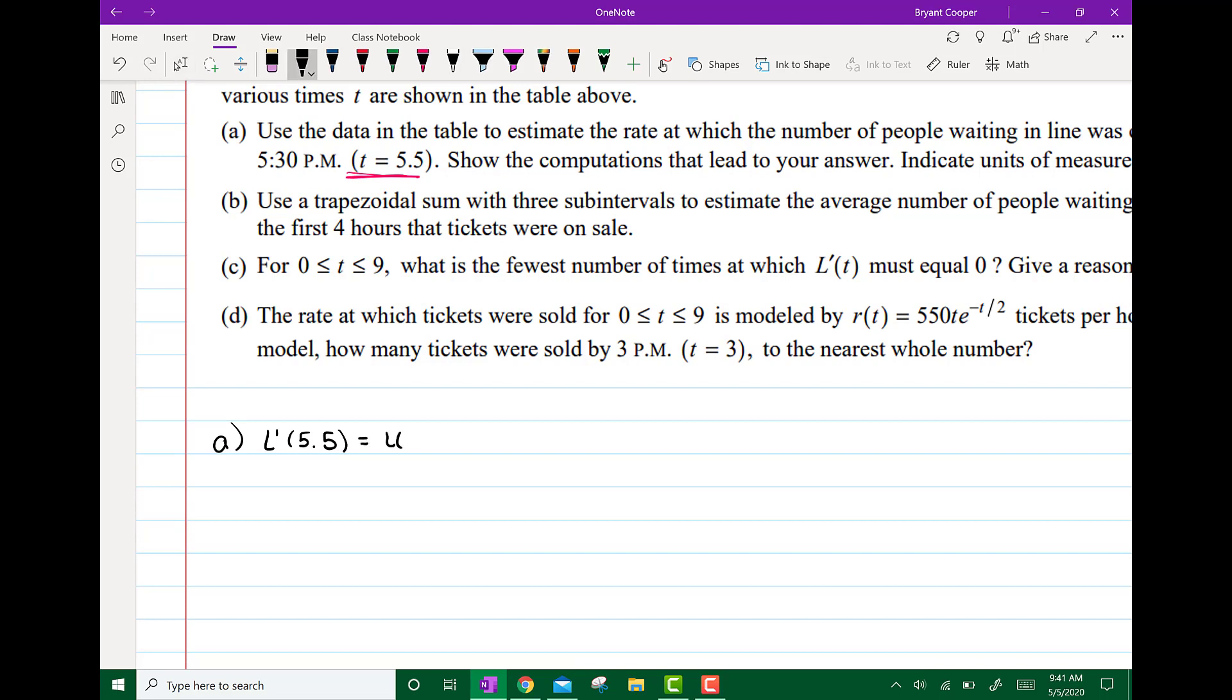So it's going to be L(7) minus L(4) divided by 7 minus 4, and that gives us 150 minus 126 over 3, and that's going to be 8 people per hour.